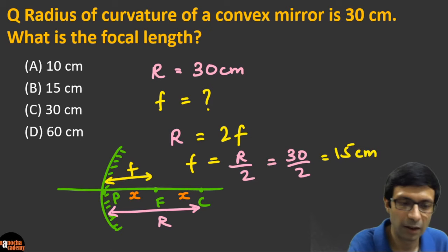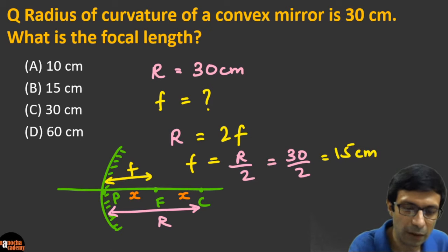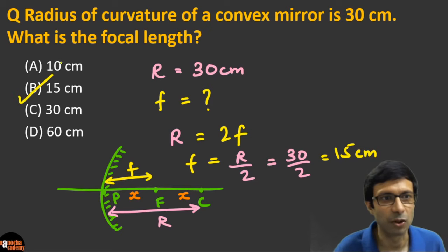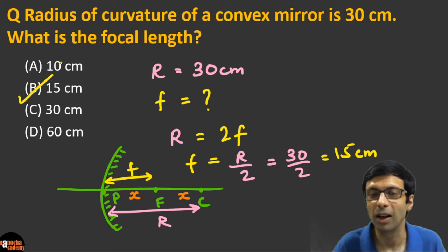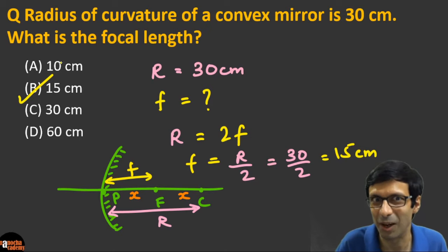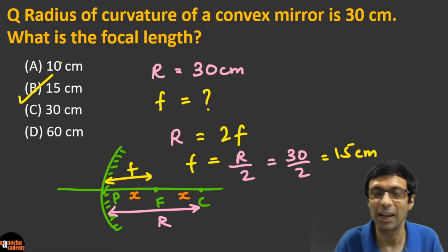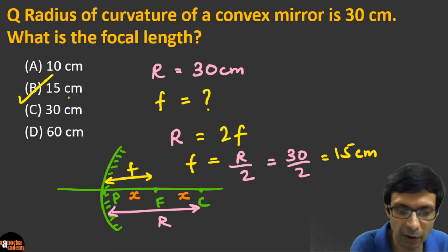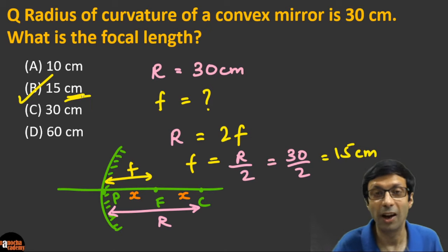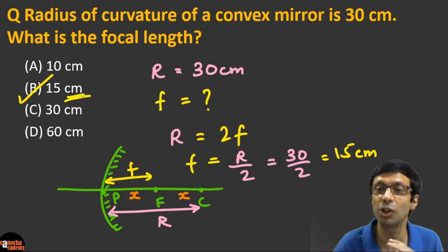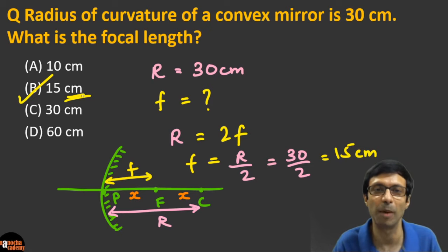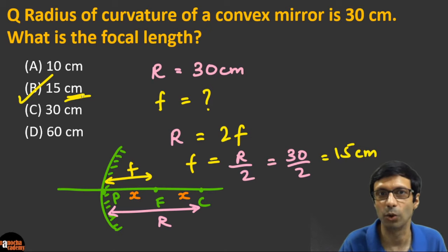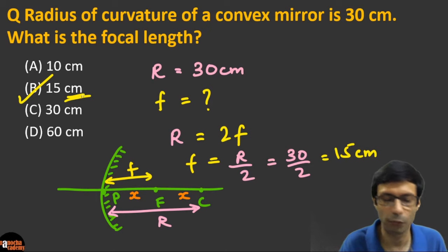Applying the formula: f = 30/2 = 15 cm. So the correct answer is 15 centimeters. If you got 60, remember we don't double it — f is half of R. And please don't forget to write the unit! It's very important in physics — your answer is 15 centimeters.